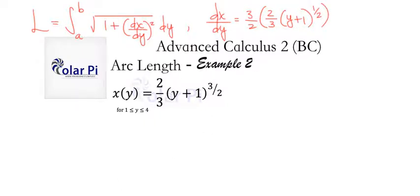And here we can simplify it a little bit, get rid of these two, get rid of these two, and write that we have dx dy is equal to y plus 1 to the 1 half power.